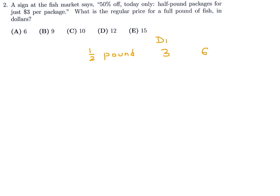Here's the discount price and here's the full price. Half a pound costs $6 regular and $3 discounted, so one full pound would obviously be double those numbers — the full pound costs $12 and the discount would be $6. What they're asking for is the regular price of a full pound, which is $12. Therefore number 2 is D.